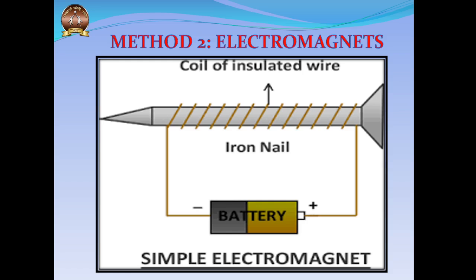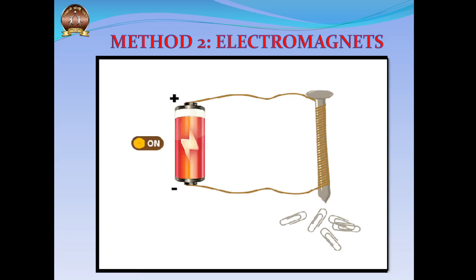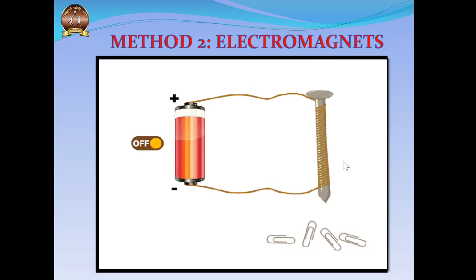When the circuit is closed — that is, both ends of the wire are connected to the positive and negative terminals of the battery — the electric current flows through the coil, and the nail starts behaving like a magnet. The moment the circuit is open, the iron nail stops acting like a magnet. So as long as the circuit is closed, it acts as a magnet; when open, it stops.